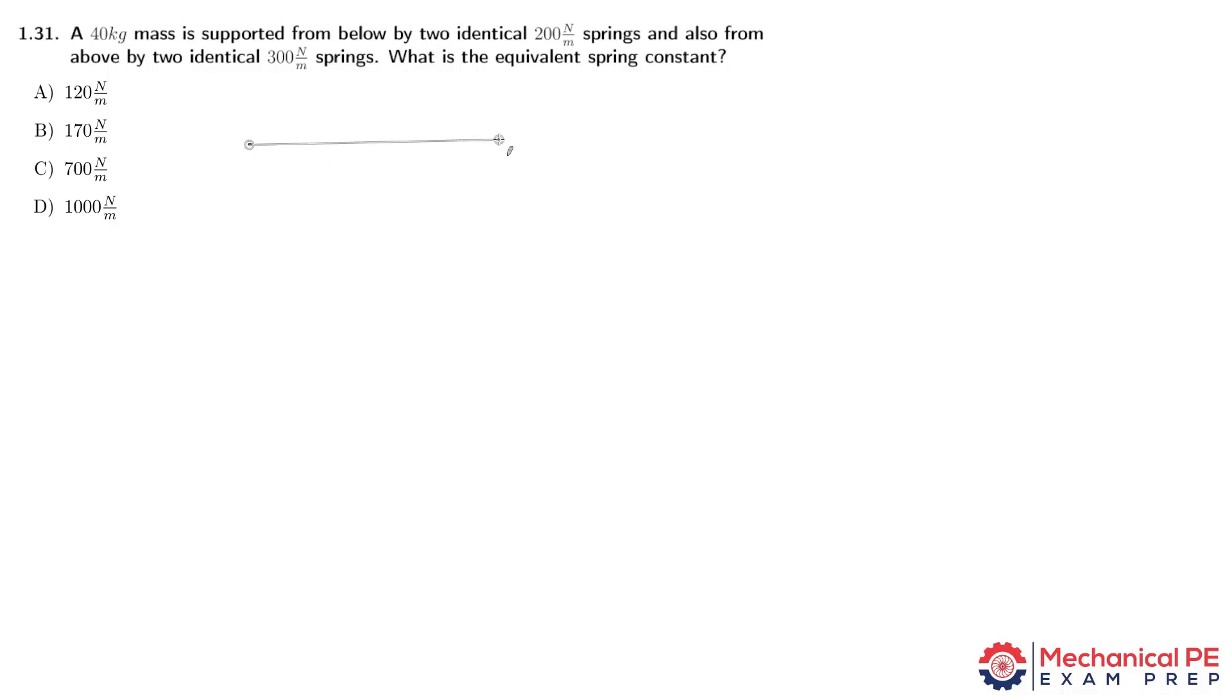We've got a situation here where we've got support for a mass from above and below, and that support is derived from four springs. The springs above are identical to one another and they have a K value of 300 newton per meter. And the springs below are a little bit less stiff but identical to one another, K equals 200 newton per meter.